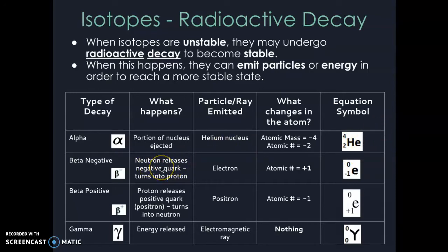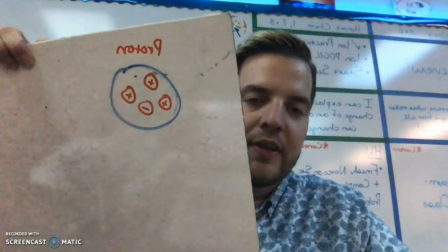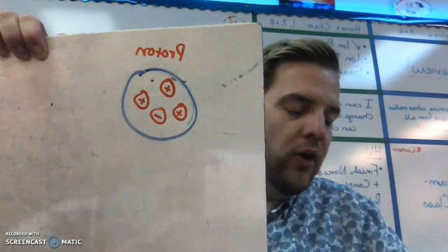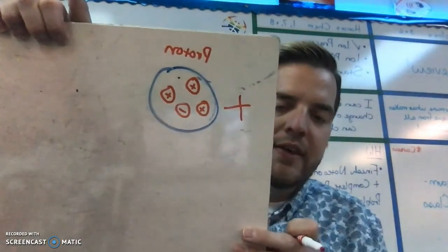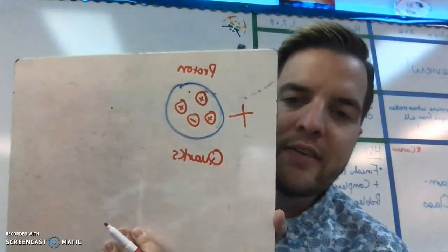Beta negative is when a neutron releases a negative core. Protons and neutrons have particles inside of them. A proton has more particles inside that are positive, so the overall charge is positive. These things inside are called quarks. Protons have more positives than negatives.